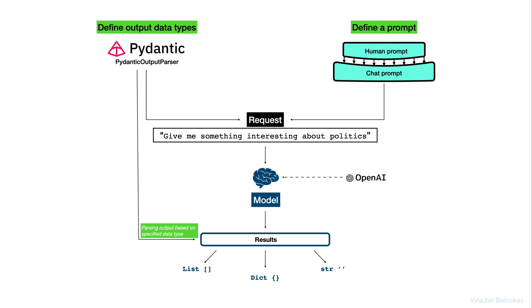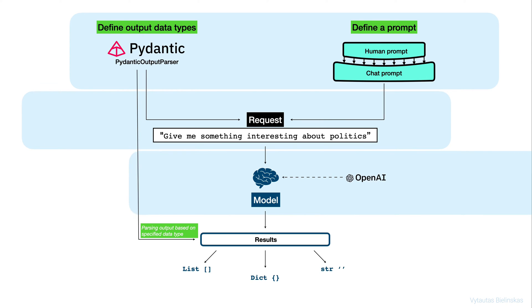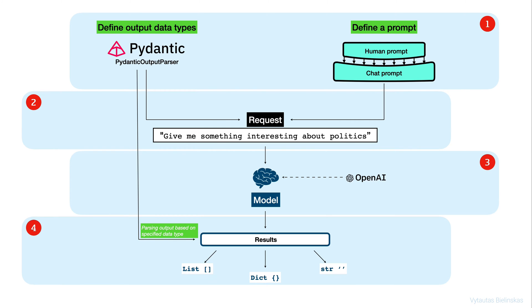We need to parse the generated result using the Pydantic output parser directly on the result generated by the model. By doing that, at the end we can get a response to our prompt in one or more data types — list, dictionary, string, or even more. You can set up your output to be one string and one dictionary, or only a dictionary, or even one string and a list of dictionaries — that you will see in the hands-on part. Overall we have these four steps: define output data types and prompts, specify your custom request, set up an LLM model, and take the output using the Pydantic parser from LangChain.